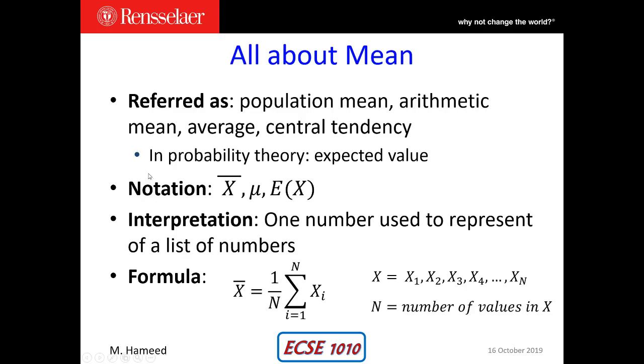How do we denote the mean? If I have a data set in X with some values, and I wanted to denote the mean of X, I would simply put a bar over it. The Greek letter mu is often used to denote the mean, and in probability theory, the expected value is referred to as capital E, the expectation of X.